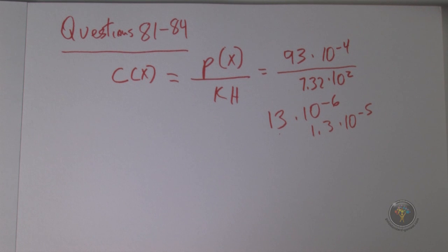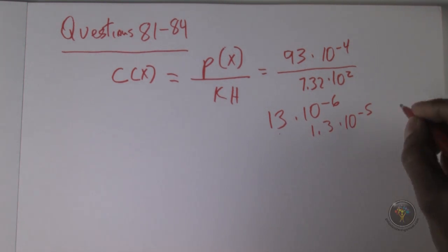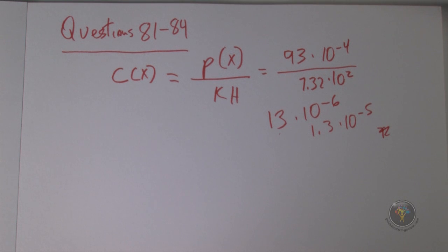Question 83: air contains nitrogen and oxygen in a four to one ratio approximately. Which of the following is the best estimate of the ratio of the concentration of nitrogen to oxygen in blood plasma?